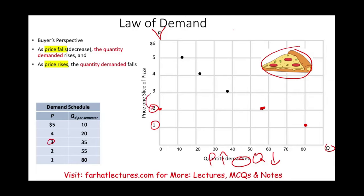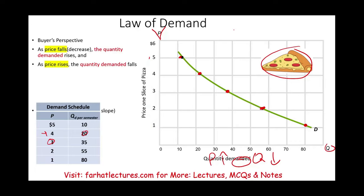At three dollars, you would only consume 35 slices. At four dollars, the price is getting higher — you really can't afford it — you will consume around 20 slices. At five dollars, you're really going to have to cut down your consumption, and you're going to consume approximately 10 slices. When we graph those points, we see a downward slope, a negative slope.